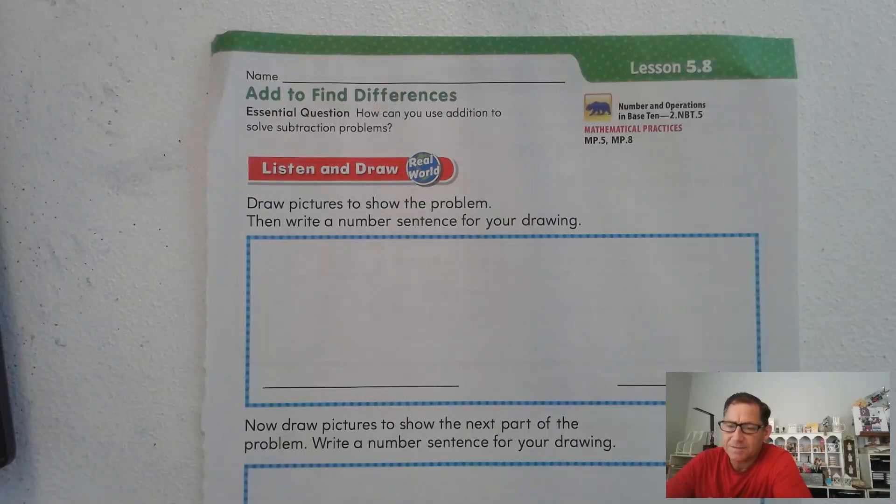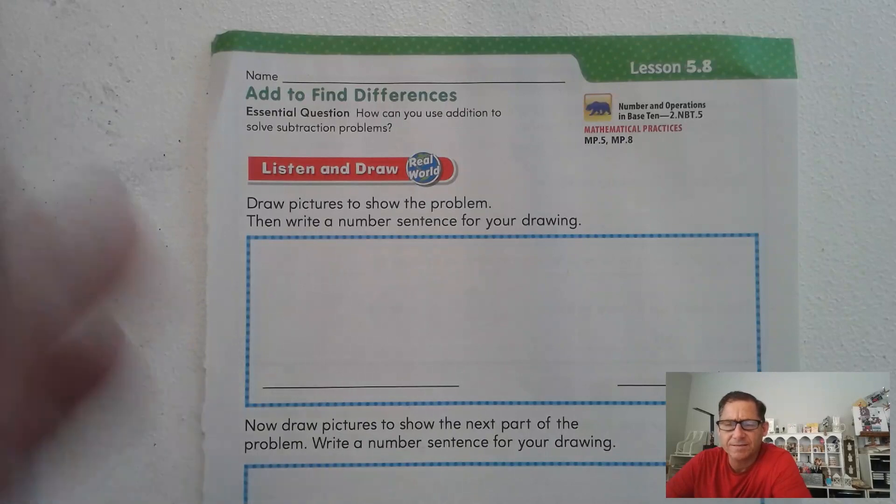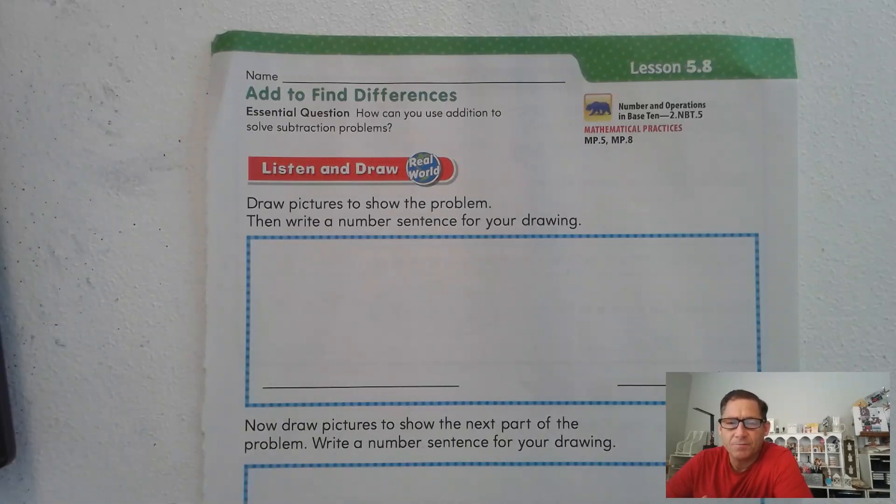We've kind of talked about this in a couple word problems from previous lessons. After I read the problem, I want you to draw a picture to show the problem and then write a number sentence for your drawing. So here's the question. Sophie had 25 markers. She gave three markers to Josh. How many markers does Sophie have now?